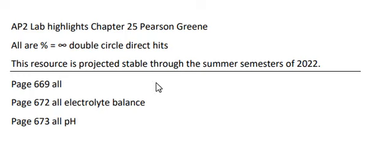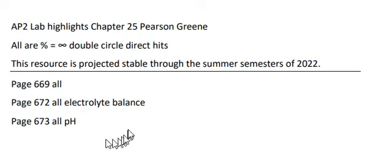Let's talk about pH for just a moment in this chapter of our lab manual. This dissociates in solution and releases hydrogen ions — is it an acid or a base? That would be number one. Number two, what is a pH of seven? What is that specifically called?